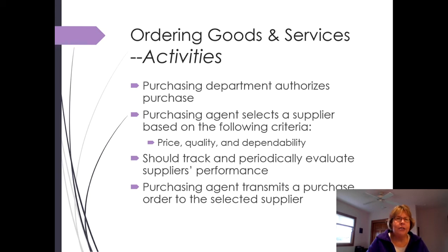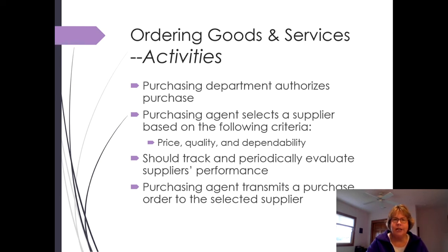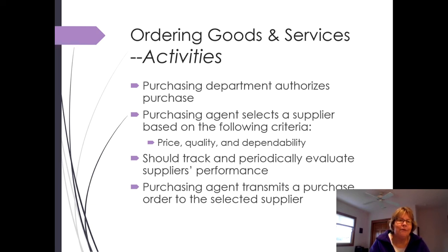The purchasing department authorizes the purchase. Notice that in the purchase requisition I did not specify which vendor or supplier to buy from — it is the purchasing department that selects the supplier. They look at three things: price, quality, and dependability — is this a reputable vendor who can deliver on time at a reasonable price? Cheapest is not always cheapest. Purchasing should also track supplier performance: is a supplier suddenly shipping late or providing lower quality goods?